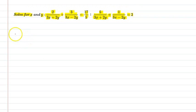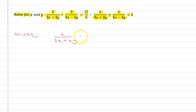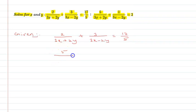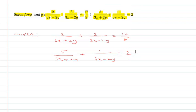We are given two equations. Equation 1: 2 upon (3x + 2y) plus 3 upon (3x - 2y) equals 17 upon 5. And equation 2: 5 upon (3x + 2y) plus 1 upon (3x - 2y) equals 2.